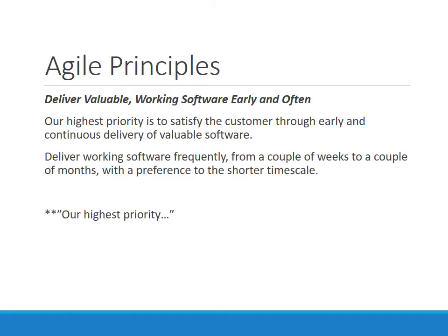There are two key Agile principles which I summarize like this: deliver valuable working software early and often. It notes that our highest priority is to satisfy the customer through early and continuous delivery of valuable software. We want to deliver working software frequently, so if it really is our highest priority, it stands to reason that we have ways to measure that, because that's our measure of success.